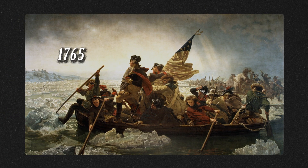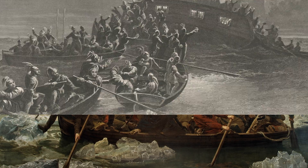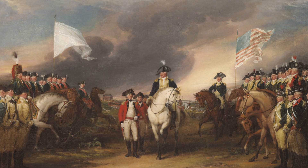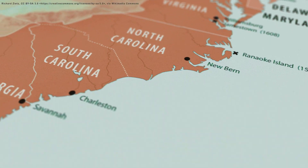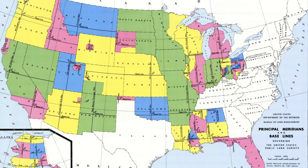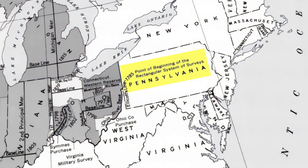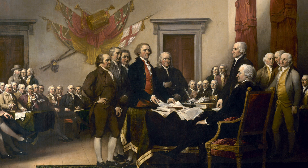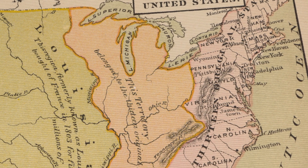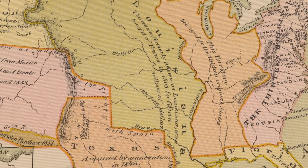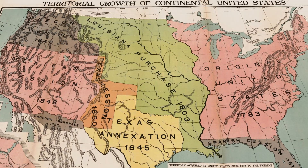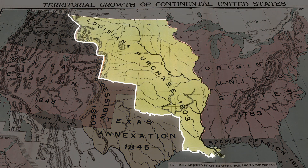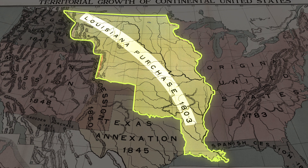Then in 1765 came the American Revolution. Between 1775 and 1783, the Americans fought the British and overthrew the British crown, gaining independence and establishing the United States by converting the original 13 British colonies into independent states. Right after independence, the PLSS was established in 1785. As an independent country, the United States then went on a westward expansion, acquiring new pieces of land. Then in 1803, the US made history by purchasing the biggest piece of land from France for $15 million, famously known as the Louisiana Purchase.